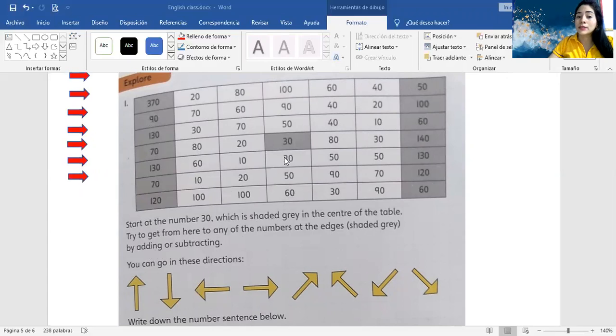Pay attention. Aquí, mira lo que dice. Vas a empezar desde el número 30, el que está sombreado de gris, el que está en la mitad de la tabla. Trata de tener, trata de tener de aquí hasta acá, de sumar o restar para ver si nos da este número. Los números que están en los bordes, lo que están de gris, estos y estos. Puedes ir en cualquiera de estas direcciones. ¿Sí ves?